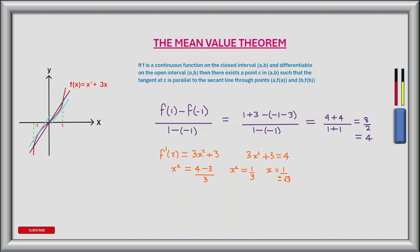I've now marked in the tangent points to the curve between values of minus 1 and 1 on the x-axis, indicated on the graph in light blue. The tangents are parallel to the secant line and occur at minus 1 divided by the square root of 3 and 1 divided by the square root of 3, as indicated on the graph.